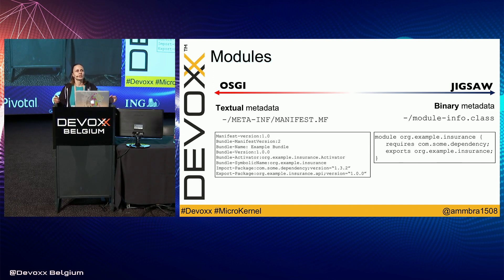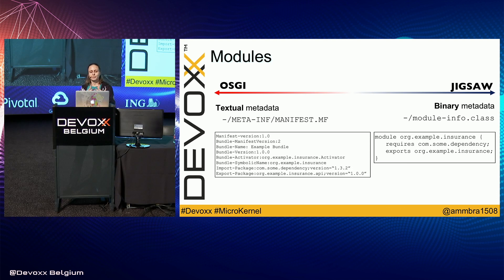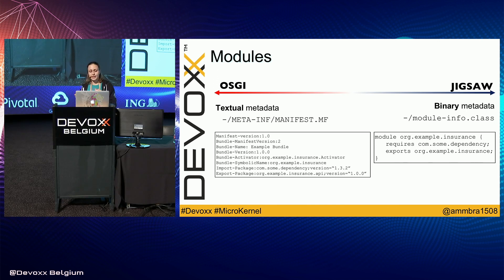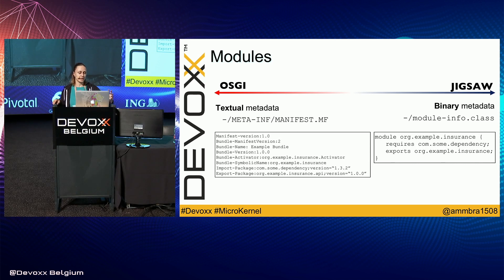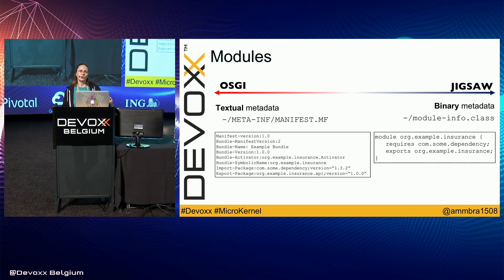OSGI works with bundles as its unit of modules. A bundle contains your Java classes together with metadata that describes the capabilities of what your bundle does. That metadata is textual, easier to manipulate, and is generated automatically or semi-automatically by a Maven bundle plugin or sometimes by your IDE. Jigsaw, on the other hand, is something you maintain manually as a developer, because your metadata is generated when you compile the module-info.java class, and you add versioning when making your module. There are pluses and minuses depending on how much you want to maintain your metadata manually — some prefer Jigsaw for Java classes, while OSGI is a good candidate if you want things automatically generated.